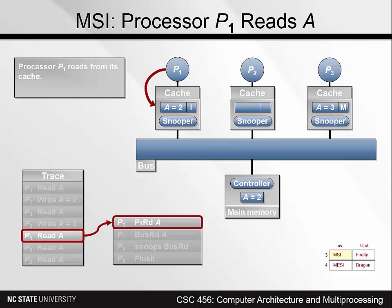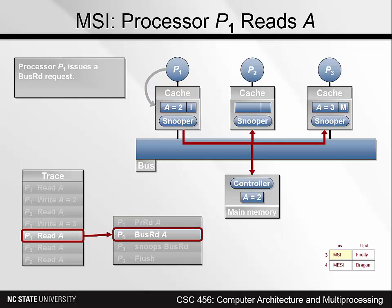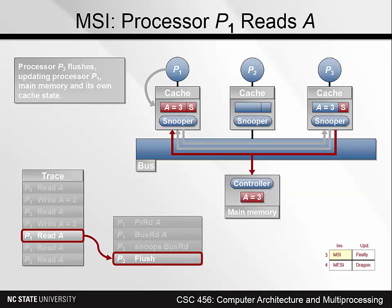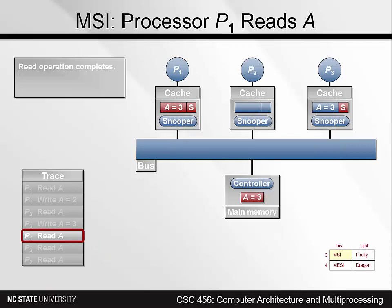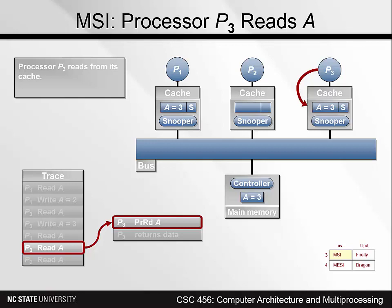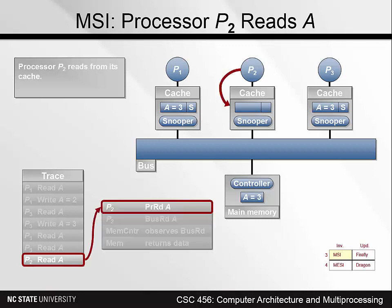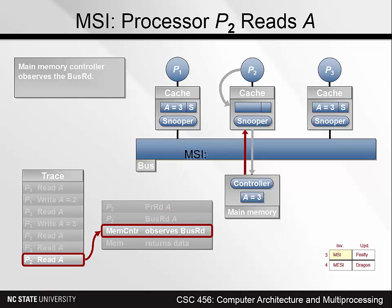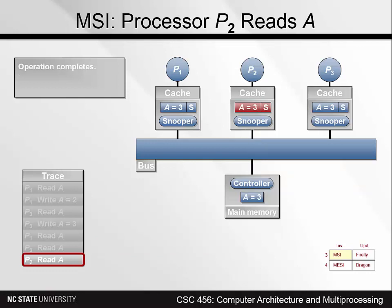Now, P1 tries to read the value of A from its cache. Since its copy is invalid, it needs to issue a bus read. P3 snoops this bus read and flushes the block out over the bus, where it is picked up by memory and P1's cache. Next, P3 reads A from its cache — this is a cache hit, so the cache simply returns the data with no bus transaction. Finally, P2 issues a read for A. Since it's a cache miss, it requires a bus read. Memory responds and sends the block to P2's cache. Now all three caches have valid copies of the block in state S.